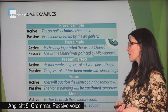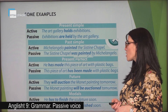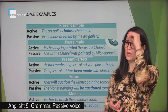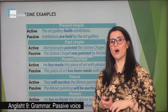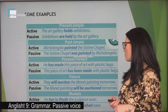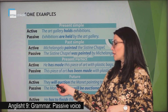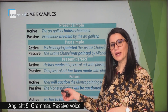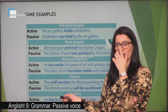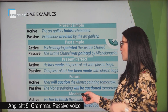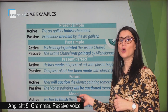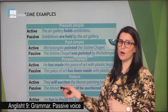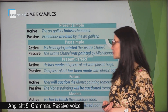Future — active: they will auction the Monet painting tomorrow. Passive: the Monet painting will be auctioned tomorrow. In the future we have 'will' plus a bare infinitive. Have a look at the passive form — we have 'will be' plus the past participle of the main verb.